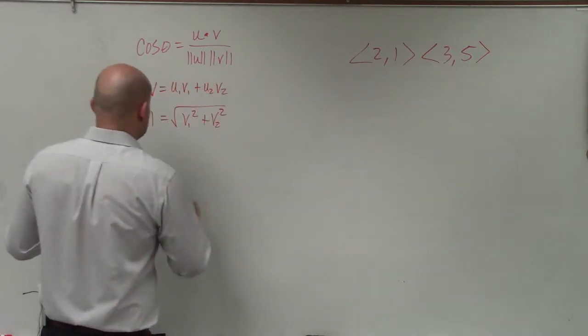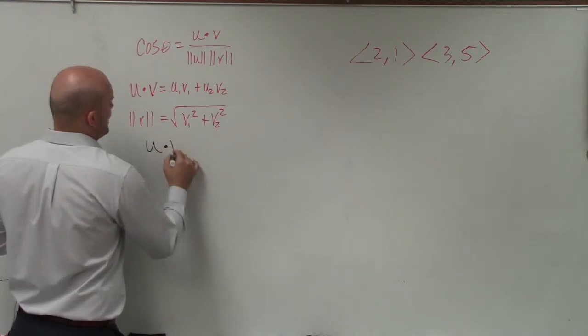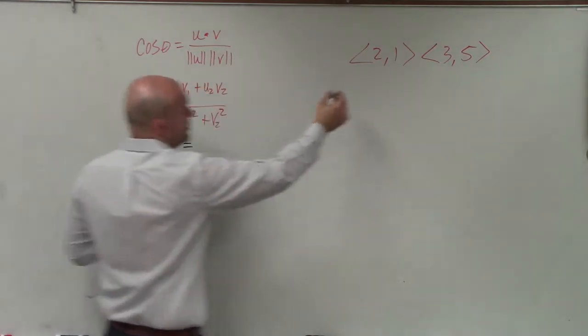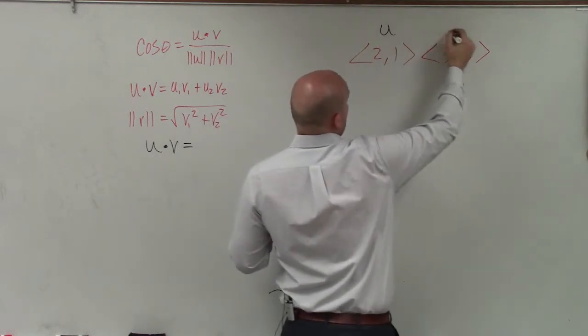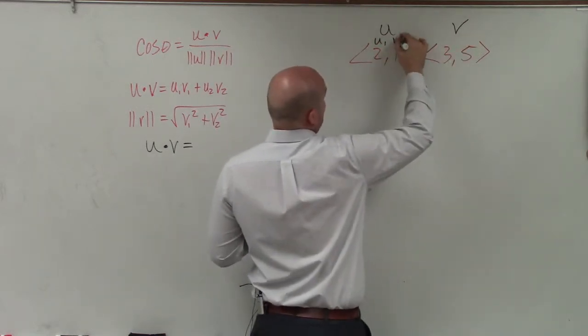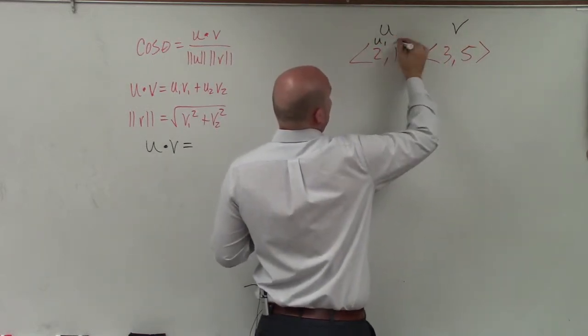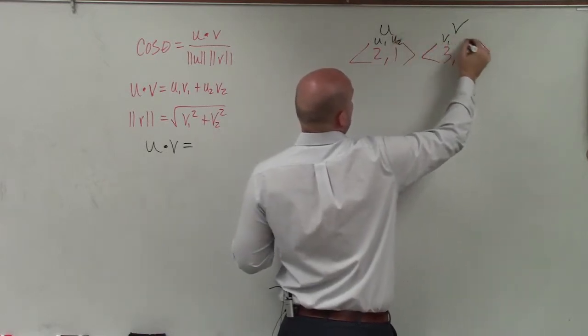So first thing is let's determine the dot product. U dot v, as I mentioned, is over there. So if this is u, and let's call this one v, that's u1, I'm sorry, that's u1, u2, v1, v2.